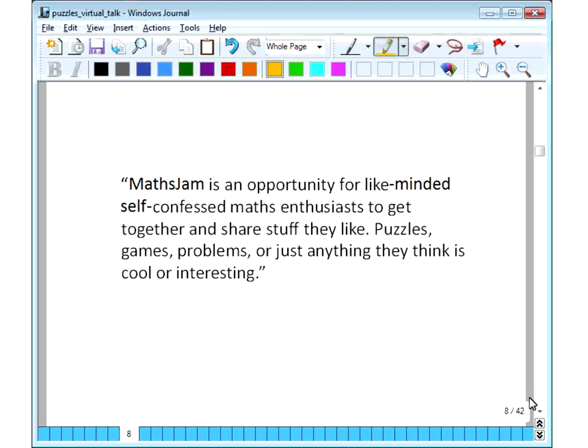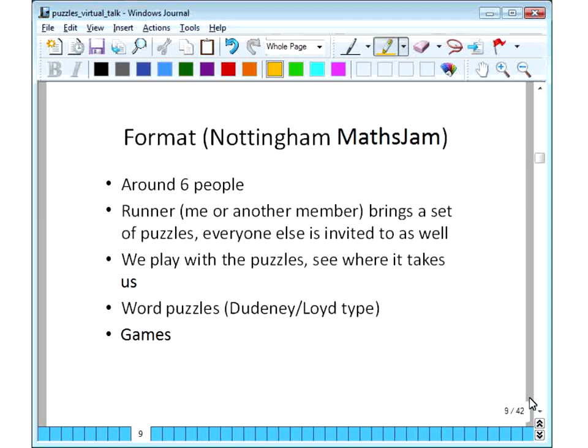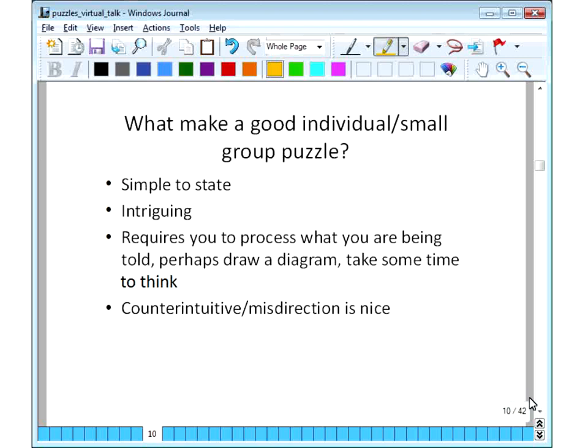These are some photos from the Nottingham MathsJam at the Vat & Fiddle. It says on the website, MathsJam is an opportunity for like-minded, self-confessed maths enthusiasts to get together and share stuff they like. Puzzles, games, problems, or just anything they think is cool or interesting. It's my observation that different groups have slightly different behaviors, I think. But I'll tell you about the Nottingham one, because that's the one I know. We often get around six people, let's say. Somebody runs it, which is often me or sometimes another member, that person will bring a set of puzzles. I try and take more puzzles than I think I'll need. And everyone else is invited to bring things along as well. And then, really, we just play with things and see where it takes us. So I might have found a puzzle in a book, and I show it to people, and then somebody says, oh, that reminds me of what I know. And then they go through their puzzle that they know. There are a lot of word puzzles of the Dudeney and Loyd type, if you know these authors. And also games, little short games that people can play.